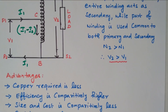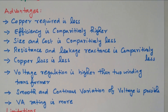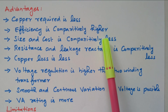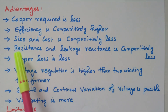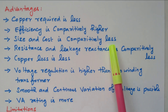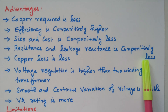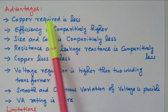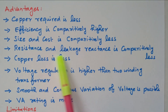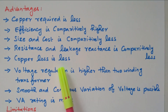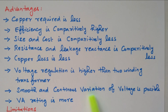Now for the advantages: copper requirement is less because only one winding is available. Efficiency is comparatively higher with no drop. Size and cost are comparatively less. Resistance and leakage reactance are comparatively less. Copper loss is also lower. Voltage regulation is better than the two-winding transformer. Smooth and continuous variation of voltage is possible. VA rating is higher. These are all the advantages.